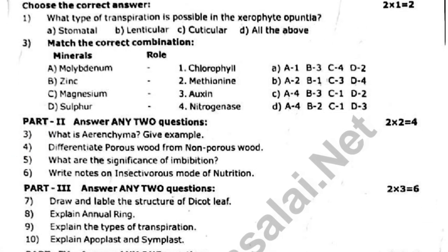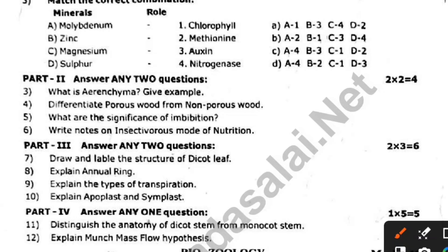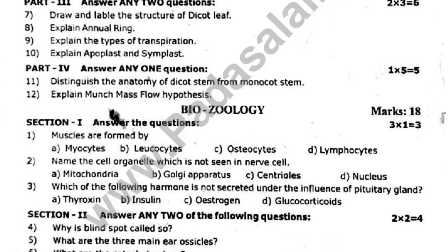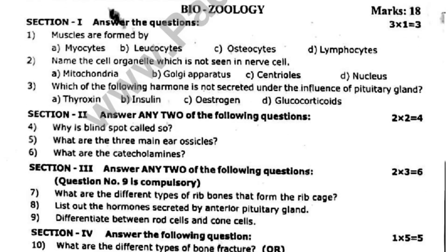The third one and the fifth one are important. If you have 3 marks, draw and label — this is important for 5 marks. You can see bio botany has two mark and three mark questions. Biosology has 1 mark, 2 mark, 3 mark, and 5 mark questions.